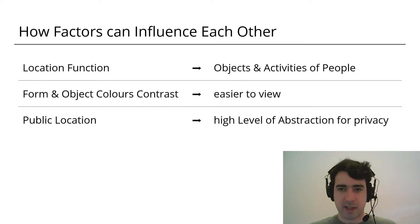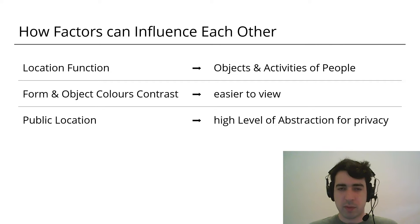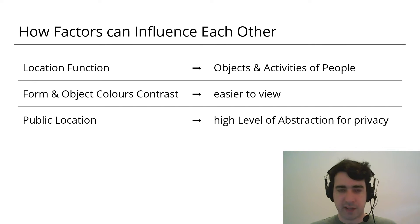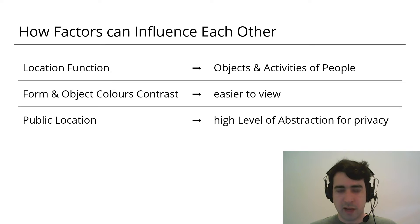Factors and properties can influence and inform the design and effects of other factors and properties. For example, the function of a location might suggest that there'll be certain objects we can expect at that location, or that people might be doing specific activities associated with that location. By designing the form to have colors that contrast with that of the underlying object, it can make the resulting visualization easier to view. And if the visualization is going to be displayed in a public location, it might make sense to use a high level of abstraction to help preserve the privacy of the data owner.